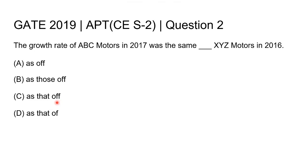Since options A, B, and C include 'off' (O-F-F), they are not correct. Option D, 'as that of,' is the correct answer because it properly describes the comparison between the growth rate of ABC motors and XYZ motors. So the right answer to this question is option D: 'as that of.'